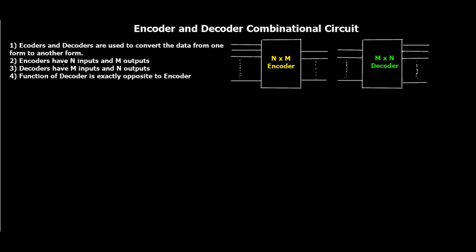In general, an encoder has n inputs and m outputs, and a decoder has m inputs and n outputs. N is usually greater than m in all cases, and there is a relation between n and m which we'll discuss in a minute. The function of a decoder is exactly opposite to that of an encoder.